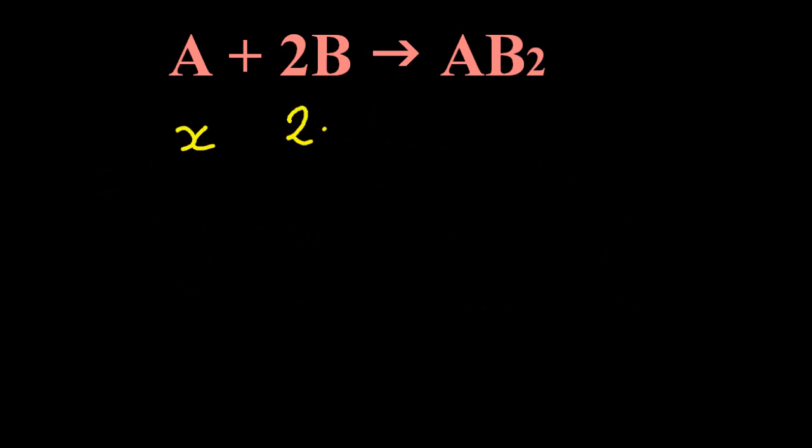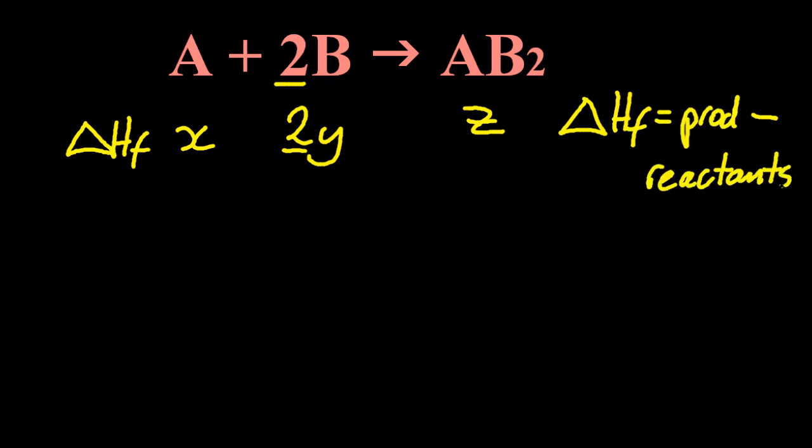Here's the equation, and if I write these algebraic values underneath, remember that whole products minus reactants thing? Well, that works for delta HF, for the change in heat of formation, that products minus reactants.